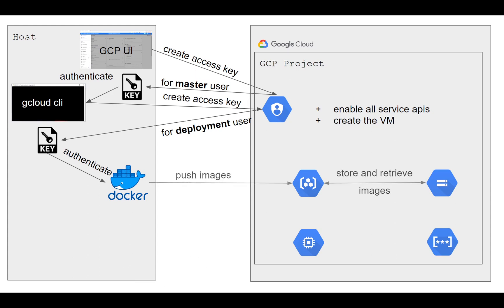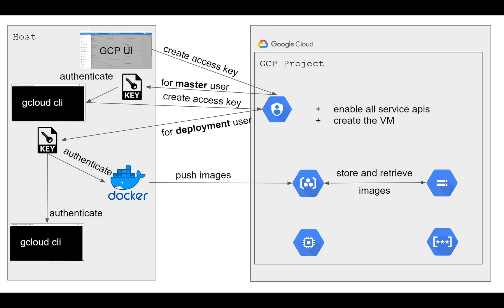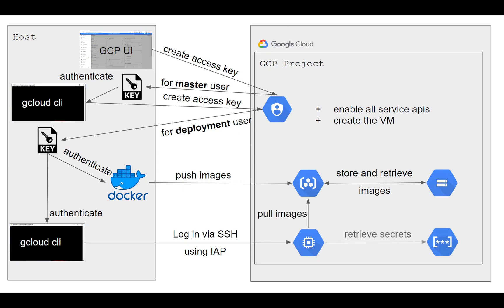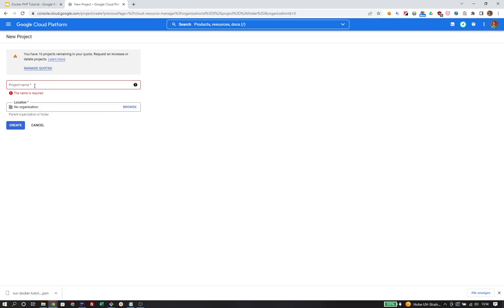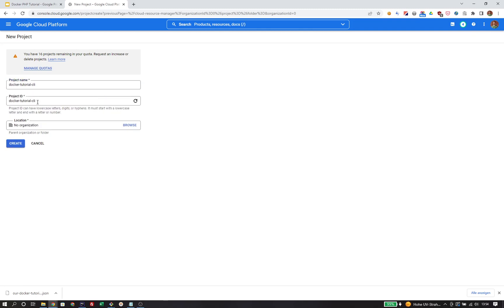We authenticate Docker to push our images, store them on Cloud Storage, authenticate our gcloud CLI to log into the compute instance via SSH, pull the images from the registry, and retrieve secrets from the Secret Manager. We first need to create a project — I'll simply choose the name and the ID docker-tutorial-CLI.